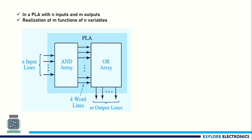As you see in the figure here, it will be having a series of AND gates — we call it the AND array — and the output will be taken from a series of OR gates — we call it the OR array. There will be a connection between the AND array and the OR array. We need to fuse and defuse to make or break the connection. There are N input lines referring to N variables, M output lines for M expressions, and K word lines as connections between the AND and OR arrays.